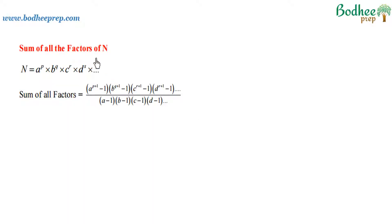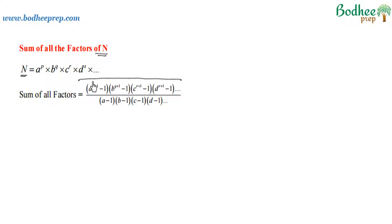Let us understand the formula for sum of the factors of any number m. If any number m can be prime factorized such that a, b, c, d, etc. are the prime factors of n and e, q, r, s, etc. are the respective powers of those prime factors of n, then the sum of factors is given by this formula. The formula can be derived easily; rather than taking variables, I am taking numbers to understand how we arrived at this formula.